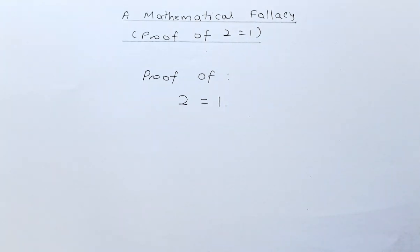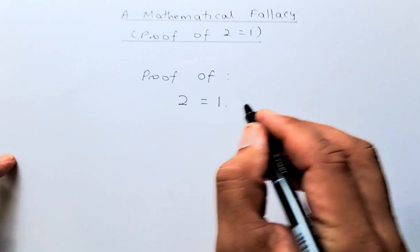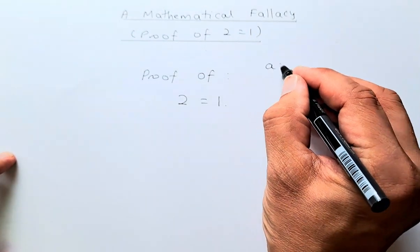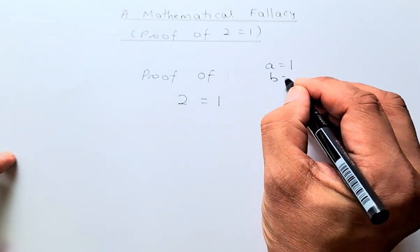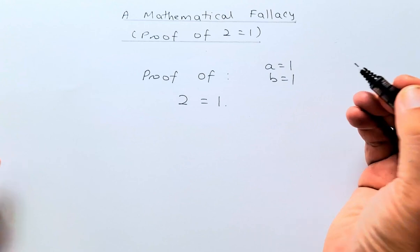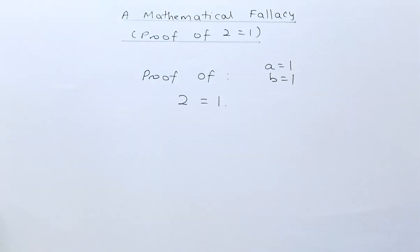First thing I'm going to use is two letters. So I'm going to represent the two letters with A and B. So suppose we let A equals to 1 and B is also equals to 1. So let's start the proving.